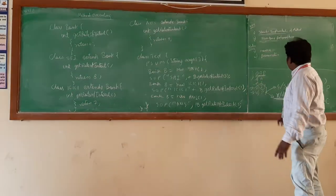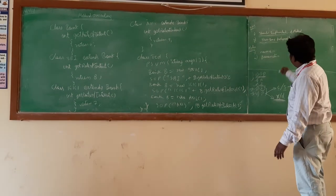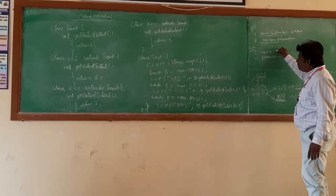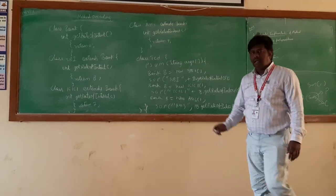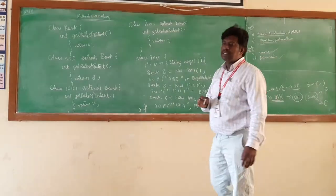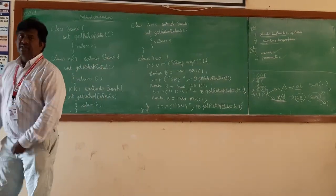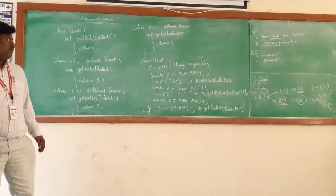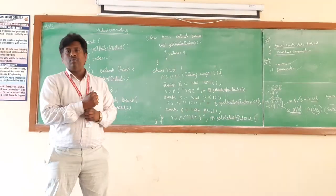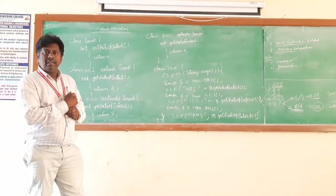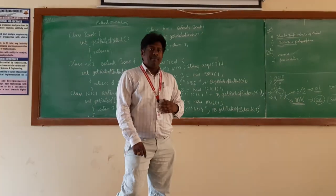Coming to the rules: the function name must be the same, and the function signature must be the same — meaning the number of arguments and type of arguments must be the same. Let us directly get into the program to see how method overriding is implemented.